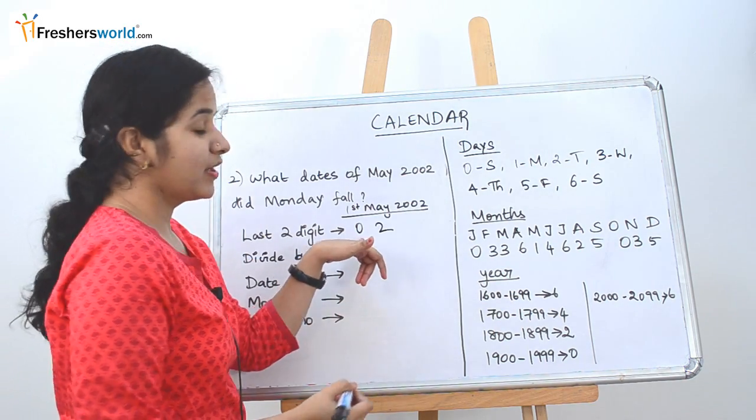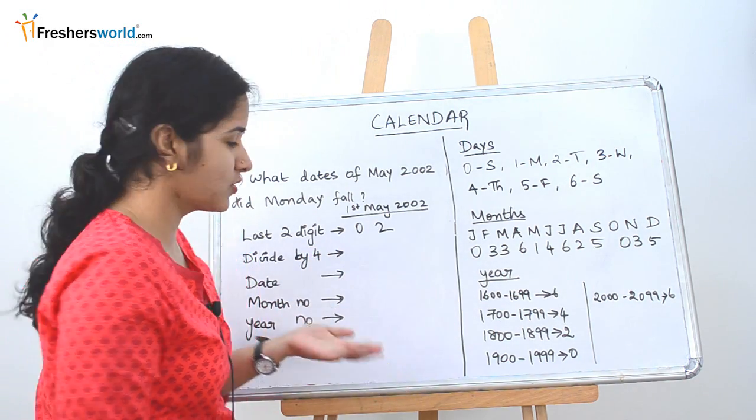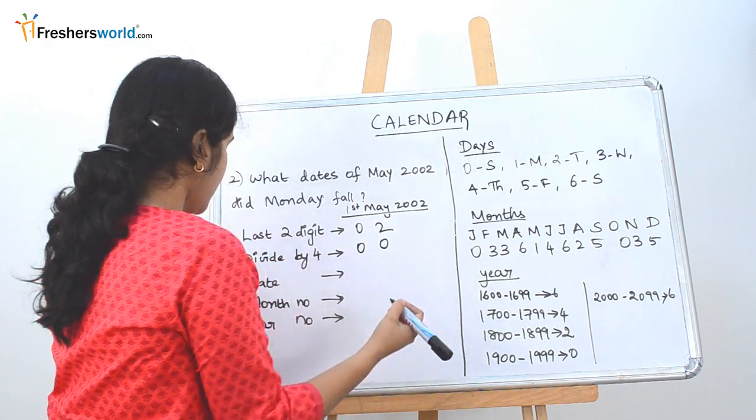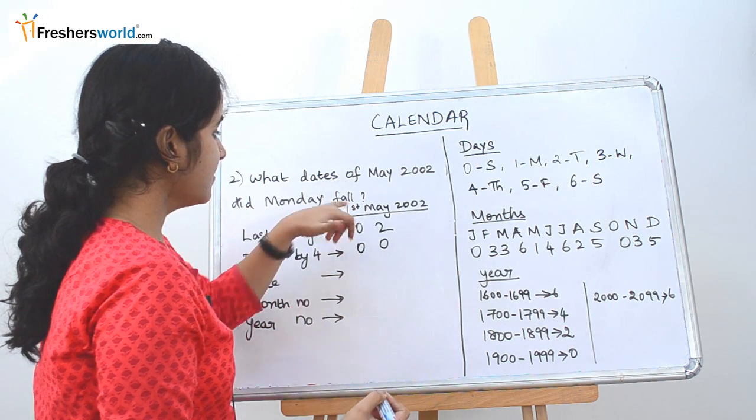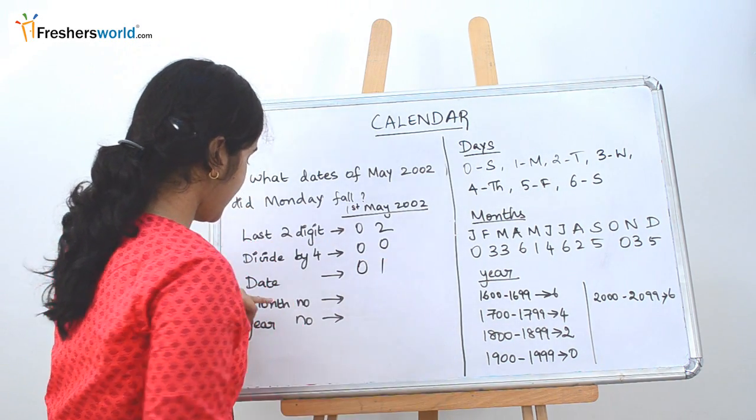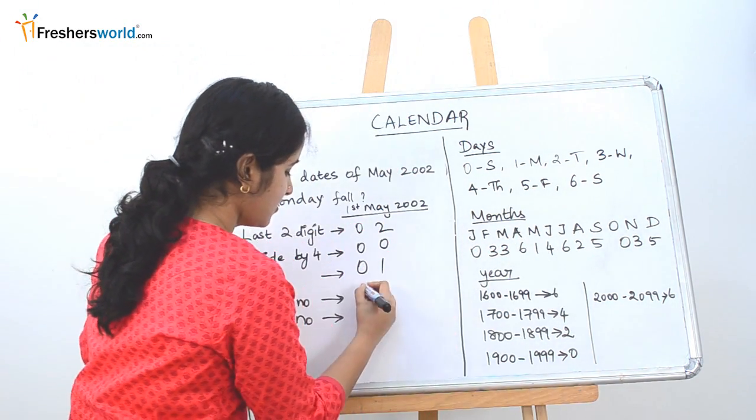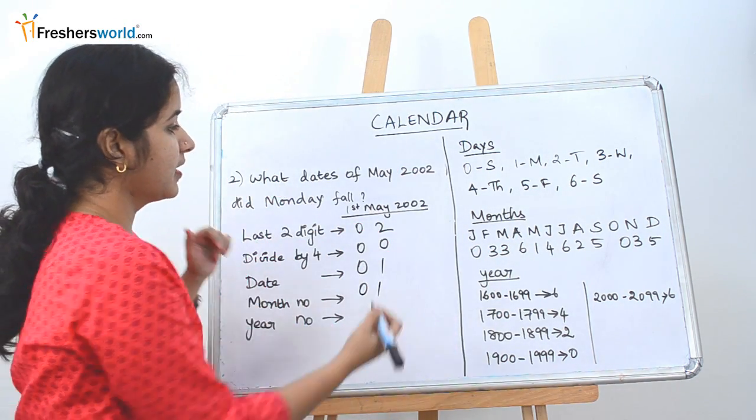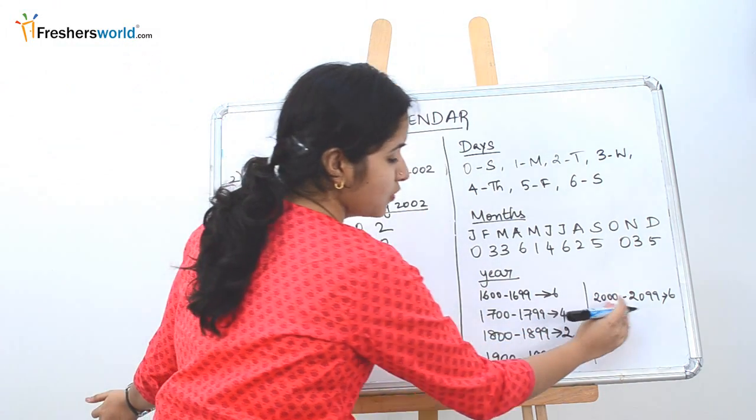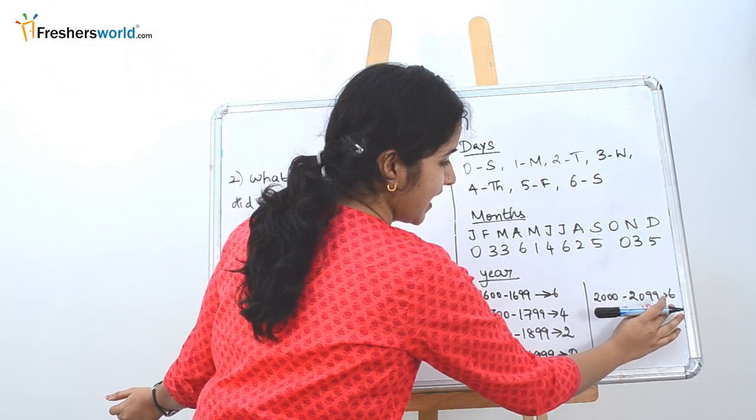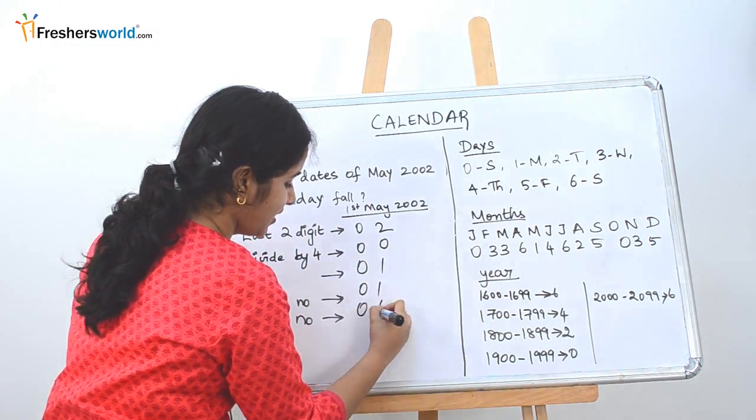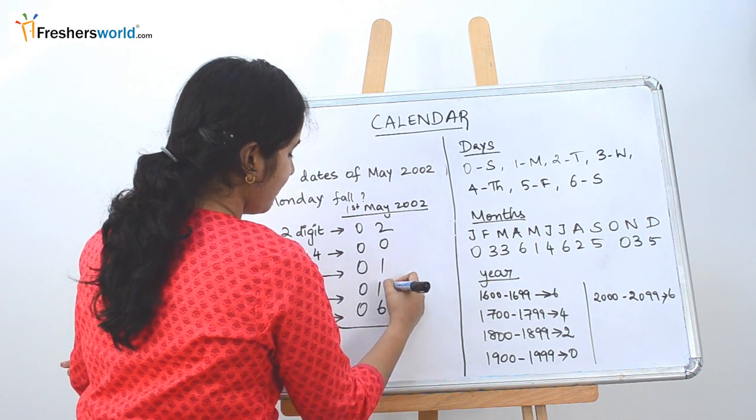Divided by 4. If we divide it by 4, we know obviously the quotient is going to be 0. Next is the date. Date is 1st 01. Next is the month number. So it is May. So May corresponds to 1. So we write 1. Year number, it falls 2002. 2002 falls under 2000 and 2099. So the number corresponding to it is 6. So 2 plus 3, 4, 10.